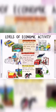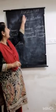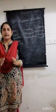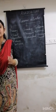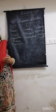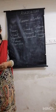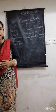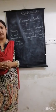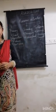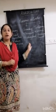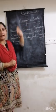Agriculture comes under primary activity. Agriculture is a primary activity which includes growing of crops, fruits, vegetables, flowers, and rearing of livestock. 50% of the world population is engaged in agricultural activity. Two-thirds of India's population still depend on agriculture. Favourable topography and climate are vital for agriculture to take place.